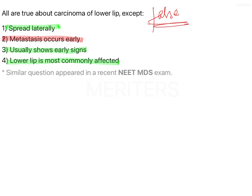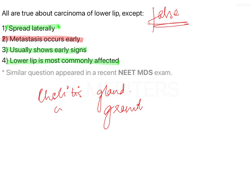One important point: you need to know the difference between cheilitis glandularis and cheilitis granulomatosa, because these can be asked as 'all are true except' questions. One has the upper lip involved, the other has the lower lip — glandularis involves the lower lip, granulomatosa involves the upper lip. Glandularis has a higher tendency to convert into squamous cell carcinoma, whereas granulomatosa has an autoimmune appearance with histology somewhat similar to sarcoidosis.